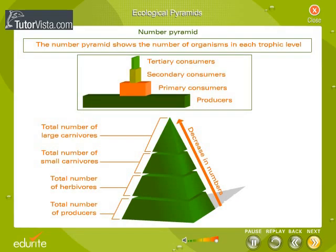Number Pyramid: The number pyramid shows the number of organisms in each trophic level and does not take into consideration the size of the organisms. The emphasis is only on the number, whether the organisms are big or small. In fact, importance may be for small organisms like planktons. In a pyramid of numbers, each consecutive layer or level contains fewer organisms than the level below it.